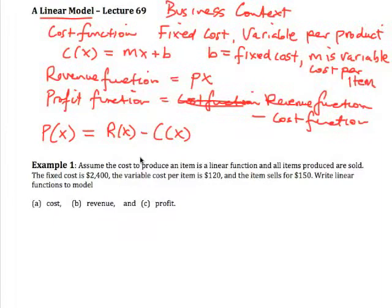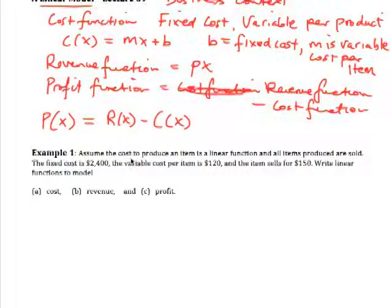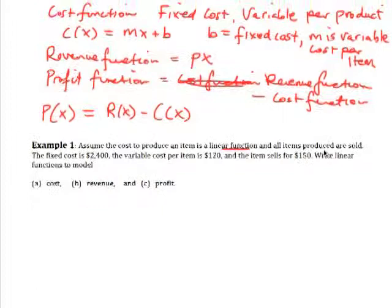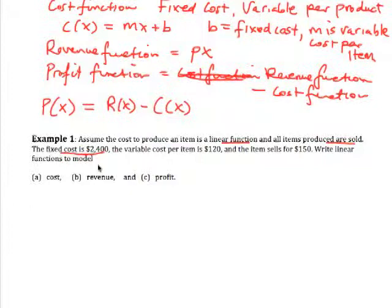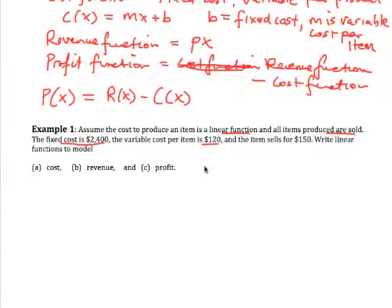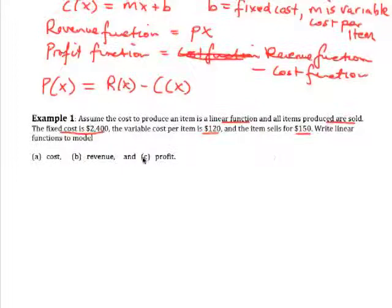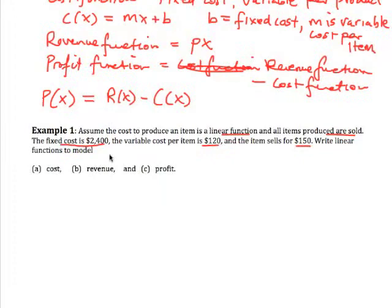Now in this first example, let's assume the cost to produce an item is a linear function, so we have a linear model and all items produced are sold. The fixed cost is $2,400, the variable cost per item is $120, and the item sells for $150. We want to write a linear model function to model the cost, the revenue, and the profit.